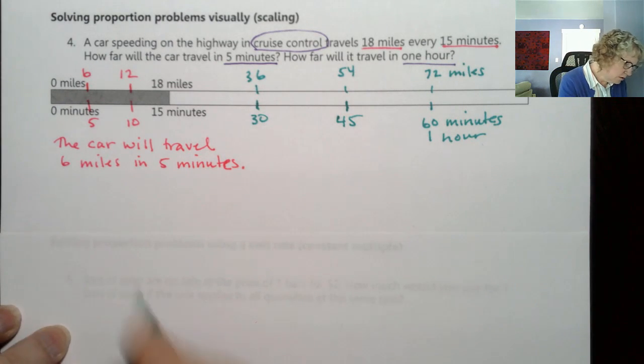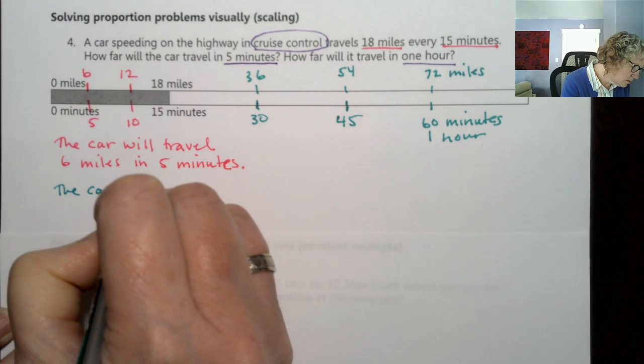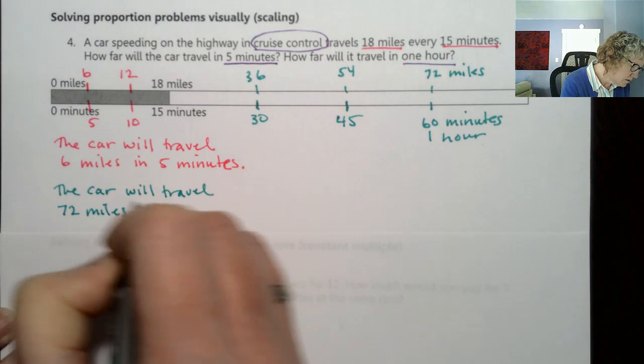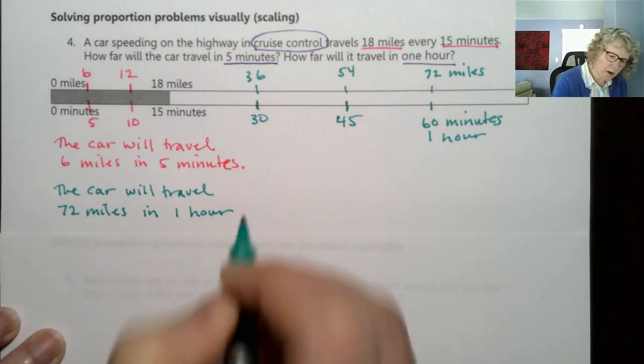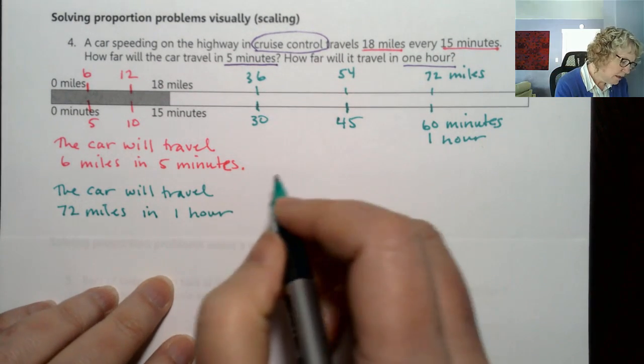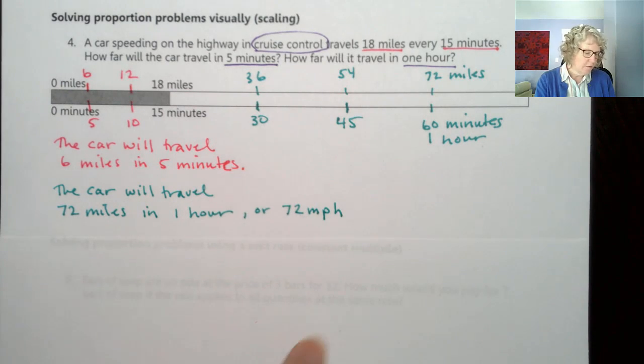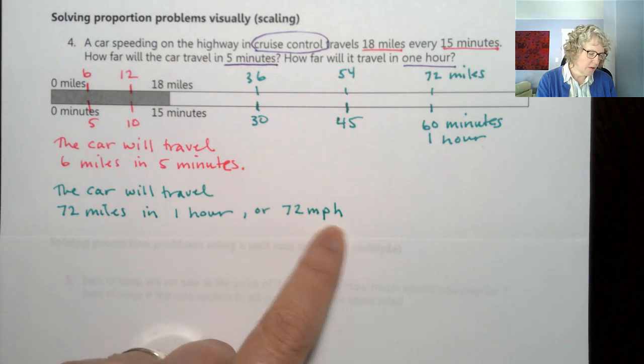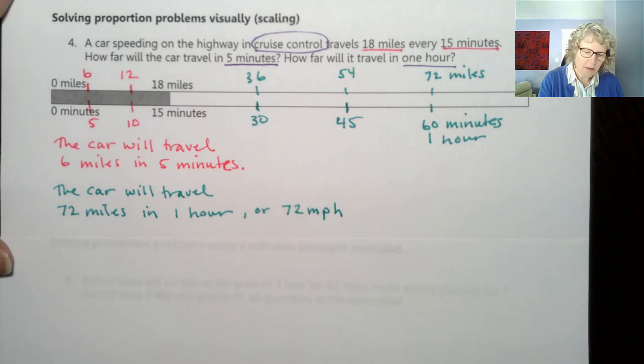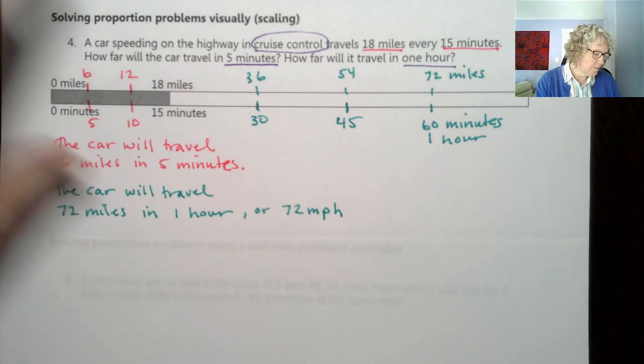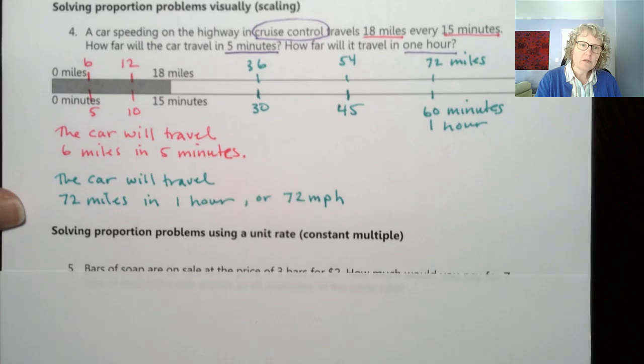This car is traveling 72 miles in 1 hour. The car will travel 72 miles in 1 hour, and of course we could also think of that as a rate which is 72 miles per hour, and you often see this abbreviation where the per is the P. That's how we can solve a proportion problem using a visual or by scaling. We were scaling by a third and then we were multiplying by 4.